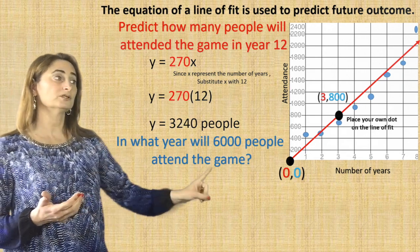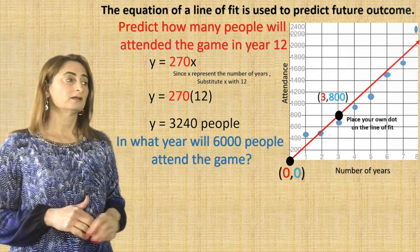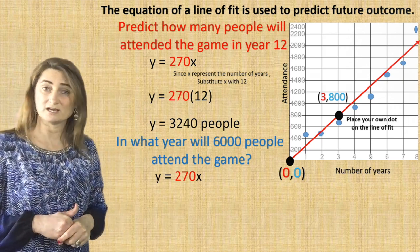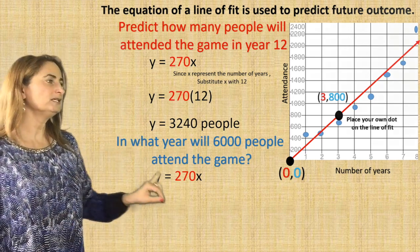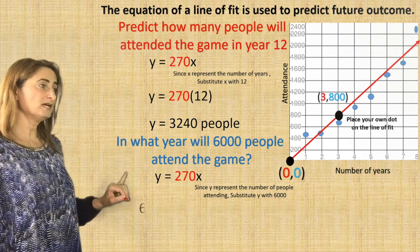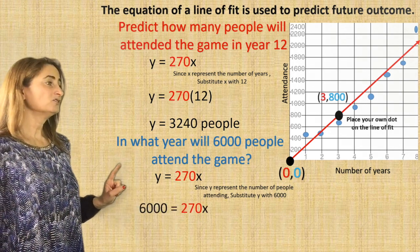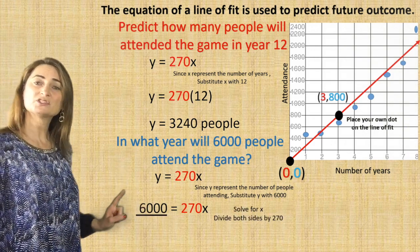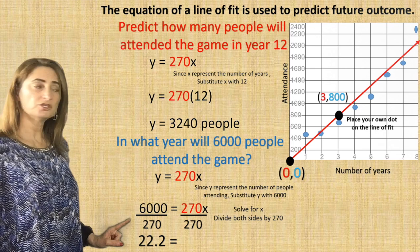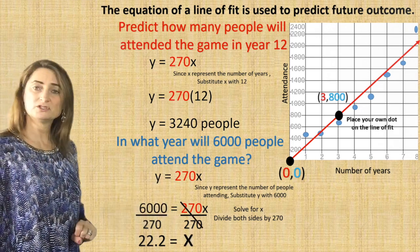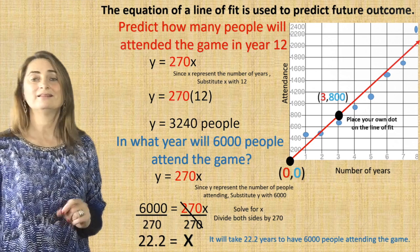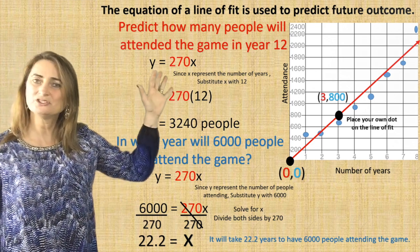Now in what year will 6,000 people attend the game? We use the equation. Since y represents the number of people attending, substitute y with 6,000: 6,000 equals 270x. Solve for x by dividing both sides by 270. 6,000 divided by 270 is 22.2, so x equals 22.2 years. It will take approximately 22.2 years to have 6,000 people attending the game.